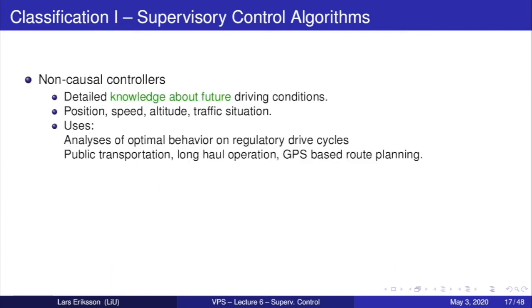Next we look at different ways of designing supervisory control algorithms. We can have non-causal controllers. That means that they use information about the future driving conditions. We can know position, speed, altitude, traffic situation. The uses of non-causal controllers are analysis of the optimal behavior, for example on regulatory drive cycles like you have done with hand-in assignment number two. Then you're using optimal control in a non-causal way because you know everything about the future. It has its practical applicability. For example, if you have public transportation where you know the bus lines, you know the stops, so you can do planning beforehand. You also have long haulage operation of trucks that are going on the same routes again and again. There you can also use that information to do planning. And if you have entered a GPS route for your trip, then you can also use that for knowing about the future.